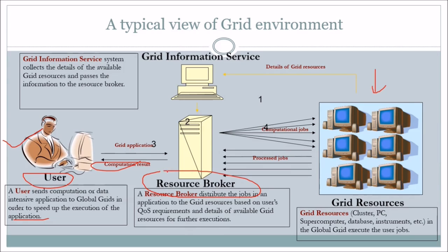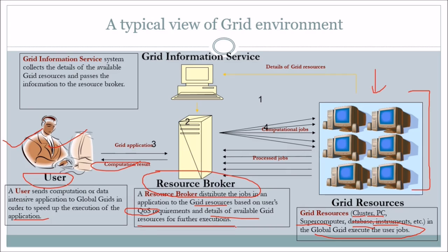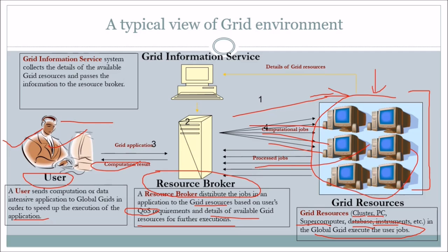The resource broker distributes the job in an application to the grid resources. These grid resources may be clusters, PCs, supercomputers, or database instruments. These are the global grids which execute the user's job. The resource broker distributes the job to the grid resources based on the user's quality of service requirement and the details of available grid resources. After computation, the grid returns the processed job to the user.